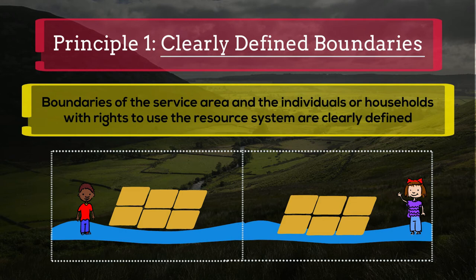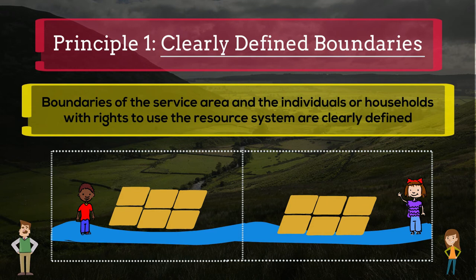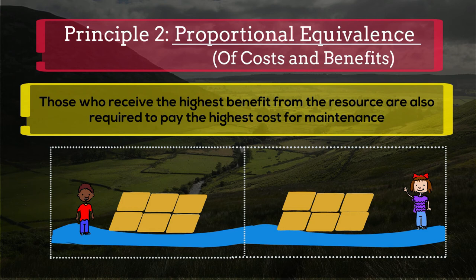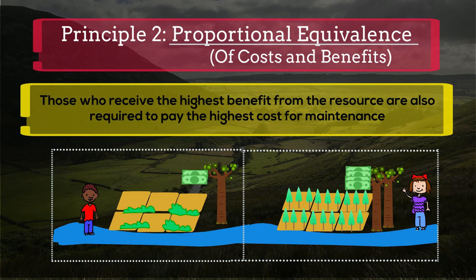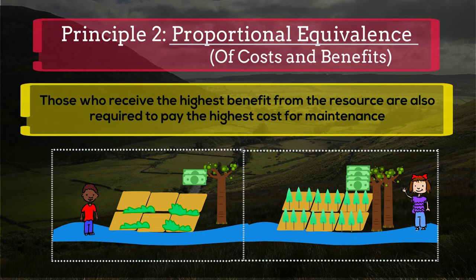Principle 2: Proportional equivalence of costs and benefits. This principle requires that those who receive the highest proportion of benefits from a resource system must also pay the highest proportion of costs required for maintaining the system, like providing labor, materials, and money for construction or monitoring. For example, if someone in the community has better tools and technology to extract more, they should also invest more than others in maintaining the long-term sustainability of the system. This makes sure that the system is fair for everyone.